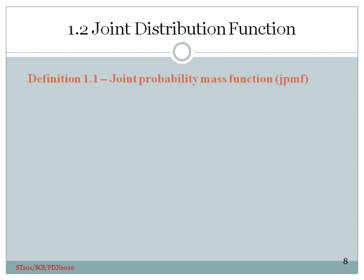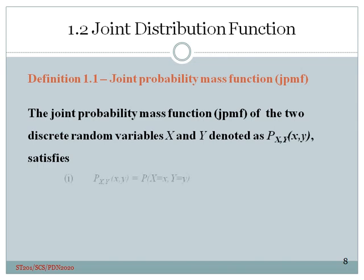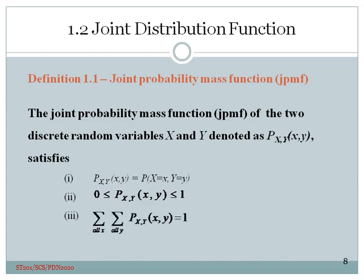Definition 1.1. Joint probability mass function JPMF. The JPMF of the two discrete random variables x and y denoted as pxy satisfies the following three conditions. Condition 1 is that pxy equals the probability that x equals simple x, that is the random variable x having value x and the random variable y having value y. Condition 2 is that these joint probabilities pxy should lie in between 0 and 1. Probability is never negative and probability never exceeds 1. Condition 3 is that the total probability is 1. That is if you sum up over all x and all y, that is the double summation of these probabilities should add up to 1.